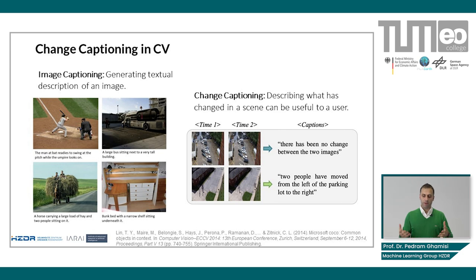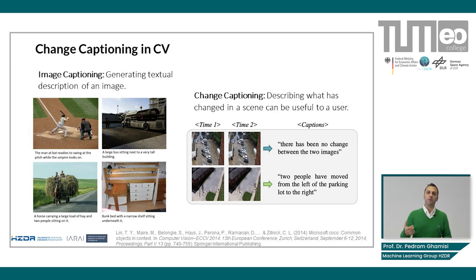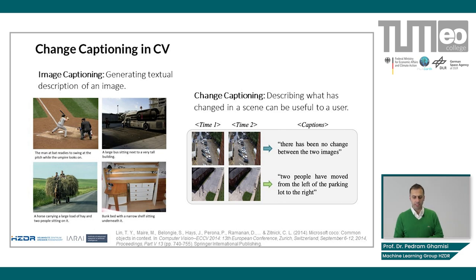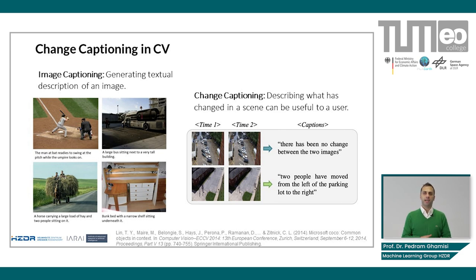This is the backbone of change captioning: we want to localize the changes and produce automatic captions for those changes. Of course, change captioning is a particular part of image captioning, but in image captioning we only have one image and we want to produce text information from it.